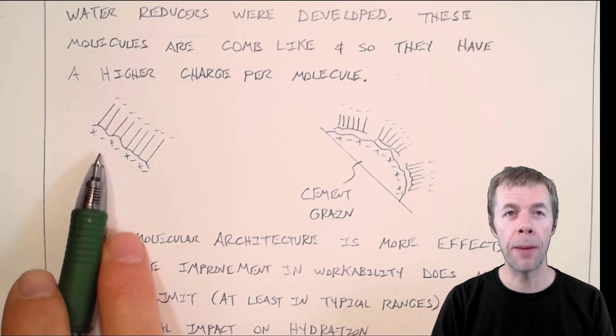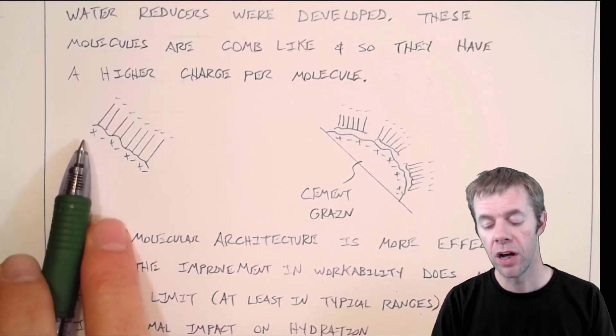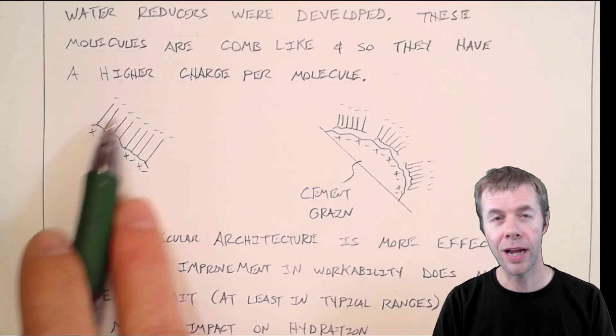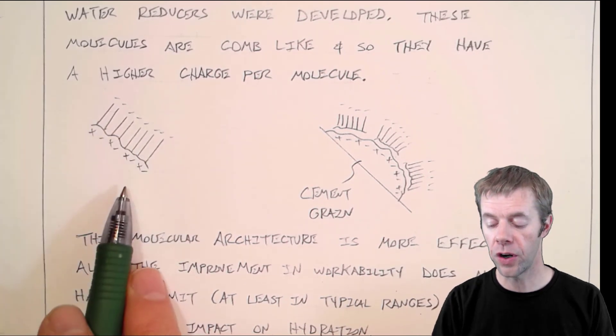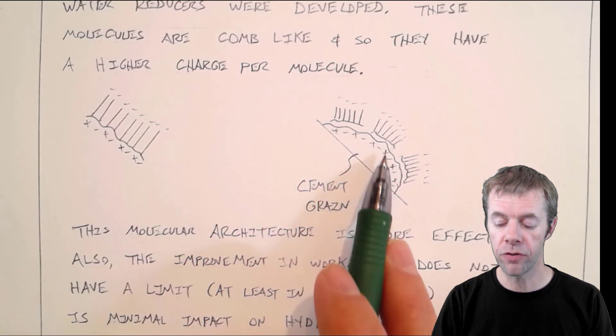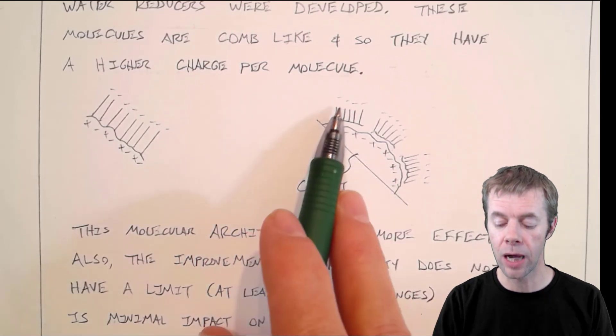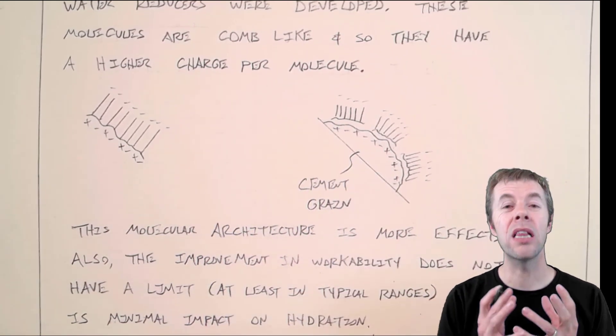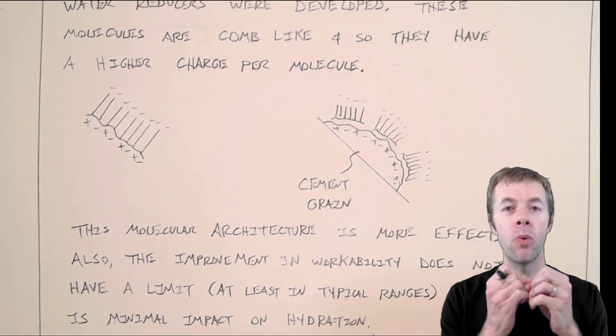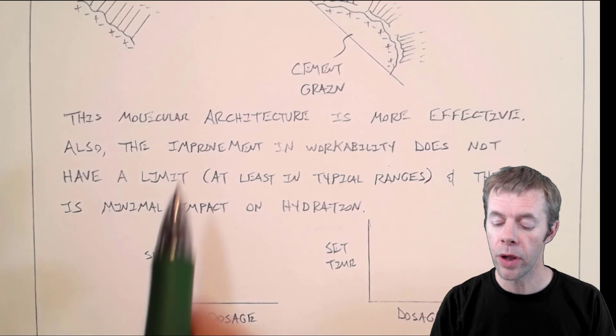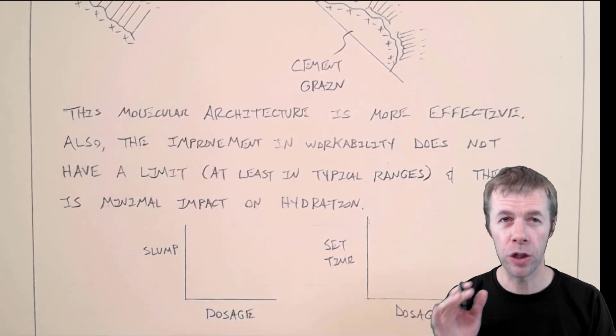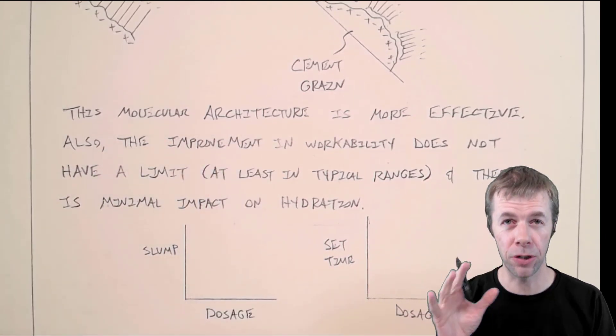They're more comb-shaped molecules. They have a large backbone and side chains. So you're able to get a lot more charge per surface area. They can do a better job of covering the actual cement grain, and again, you get a lot more charge. So what's that mean? A lot more dispersion, moving things apart from one another. The molecular architecture is much more effective. It is a game changer.